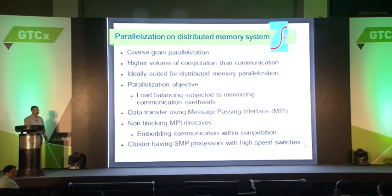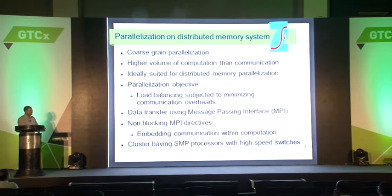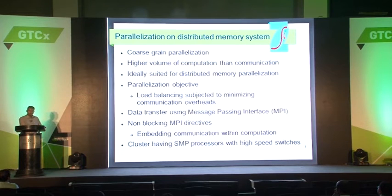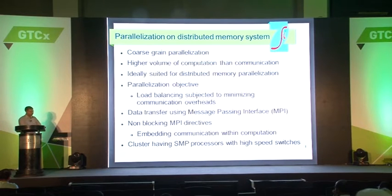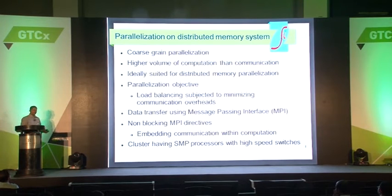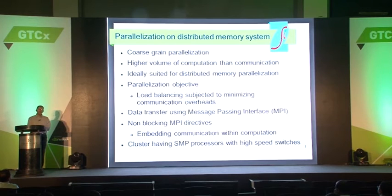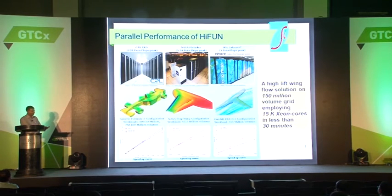Typically, the data transfer happens using message-passing interface — MPI — which is pretty standard. If a developer is clever, they would go for non-blocking MPI directives, which enables overlapping of communication with computation, thereby enhancing the parallel performance of the application. Typically, a cluster having a number of symmetric multiprocessing-based processors with high-speed switches falls under the distributed memory system.